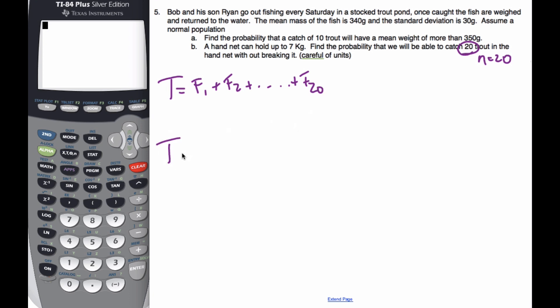Well, then my random variable is still going to be normal. My total, each of these expected values is 340, and there's 20 of them, so it's going to be 20 times 340, which is 6,800 grams.